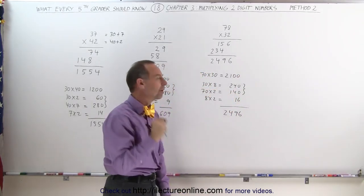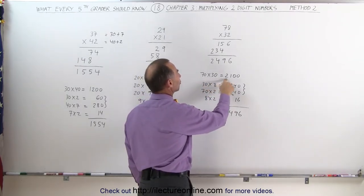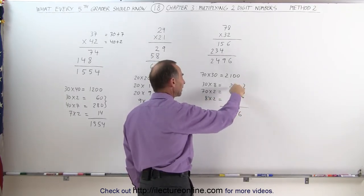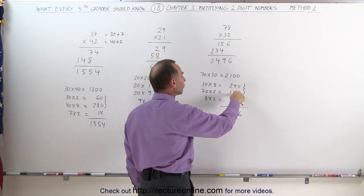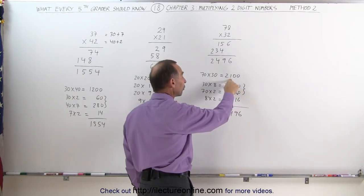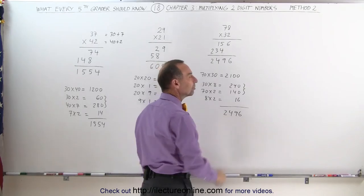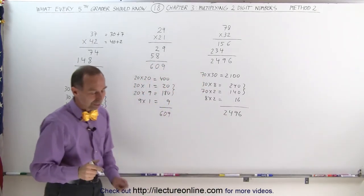But again, if you're going to do it in your head, 70 times 30 is 2100, 30 times 8 is 240, 70 times 2 is 140, 8 times 2 is 16. Add these two together, 240 plus 140 is 380, plus 1 is 480, 2480 plus 16 is 2496. And that's how it's done, method 2.